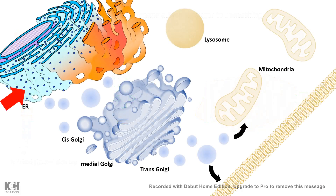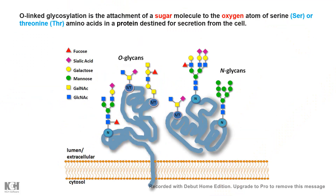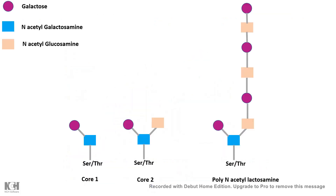O-linked glycosylation takes place in the Golgi apparatus. Unlike N-linked glycosylation, O-linked glycosylation takes place on serine or threonine residues of amino acids. And if you remember, N-linked glycosylation takes place on asparagine residues. Now, there could be multiple different structures of these O-linked glycosylation tags, and this tag varies from different protein to protein.